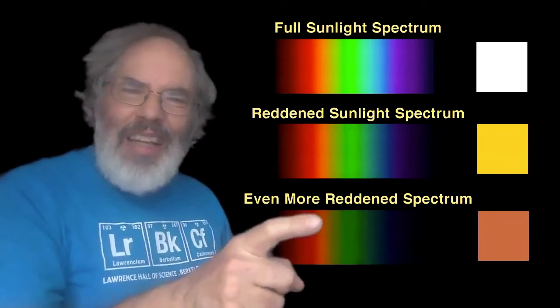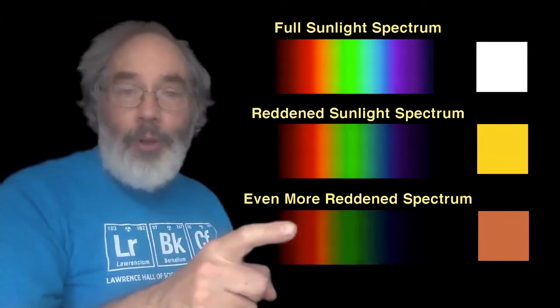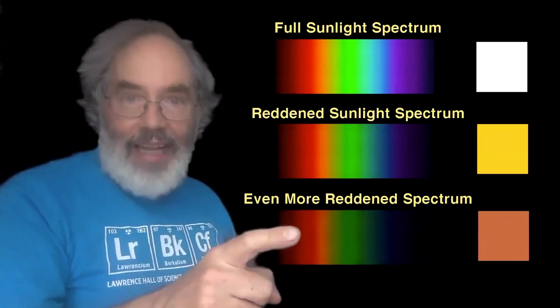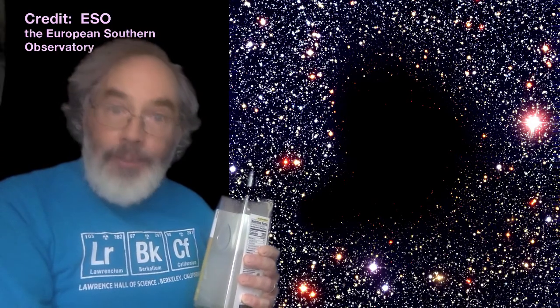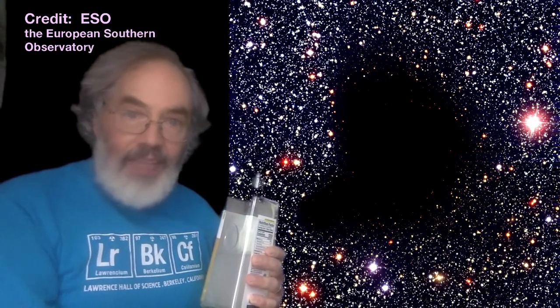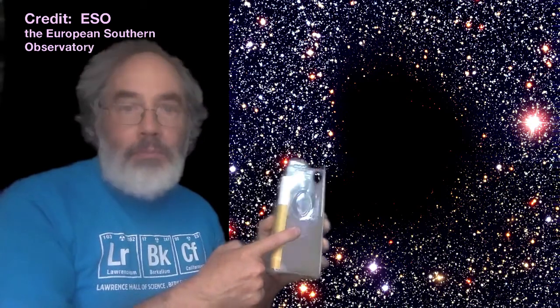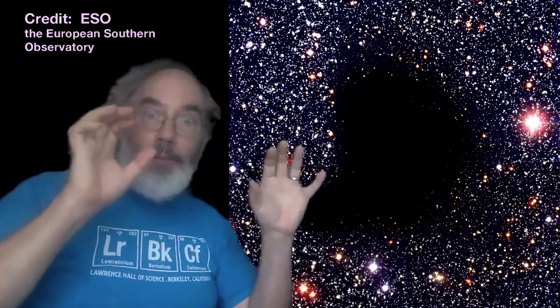A little of the green gets through, and almost all of the red light gets through. So you can observe the reddening of light on a small scale with milky water, on a larger scale with sunlight shining through the atmosphere, and if it's smoky, the reddening effect will be even stronger.